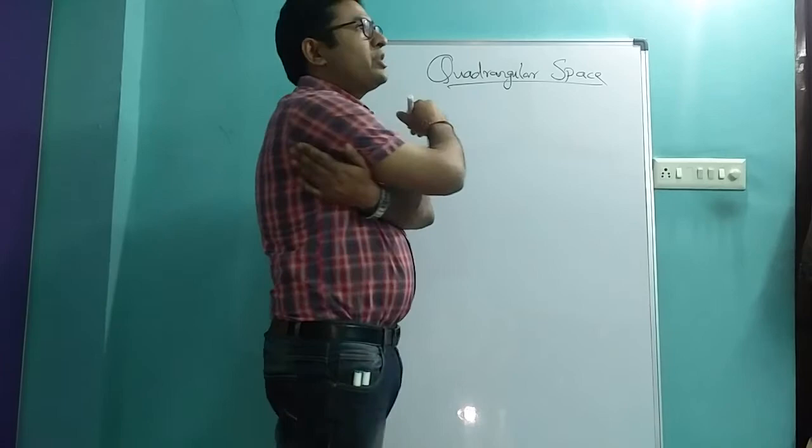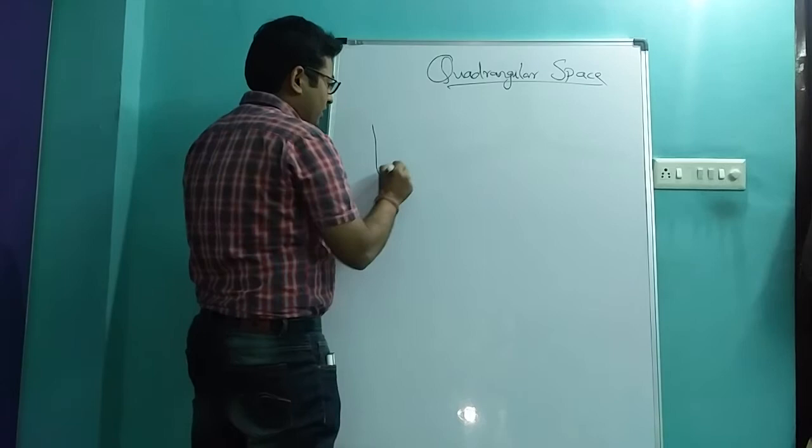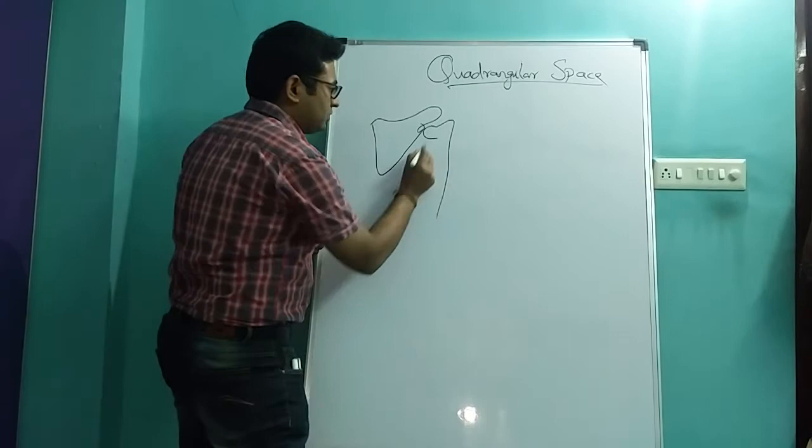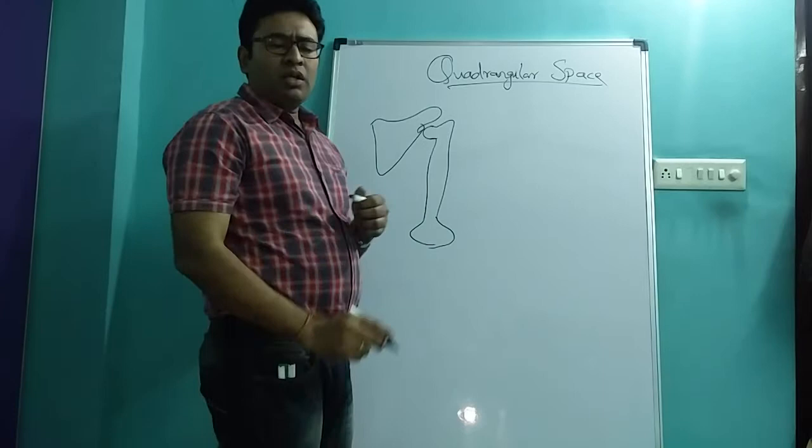For the posterior side, the first bone that we are going to see here is the scapula. On the lateral side of it, it is articulating with the humerus. So this is the diagrammatic representation of humerus and the two bones: scapula and humerus.